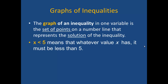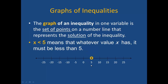The graph of an inequality in one variable is the set of points on a number line that represents the solution of the inequality. For example, if we look at x is less than 5, it means that whatever value x has, it must be less than 5. To graph this, we take a look at the number line and put a point at 5. I used an open point because our inequality uses less than, not less than or equal. Therefore, 5 is not part of the solution. We then draw an arrow pointing to the left because we are interested in all numbers that are less than 5.